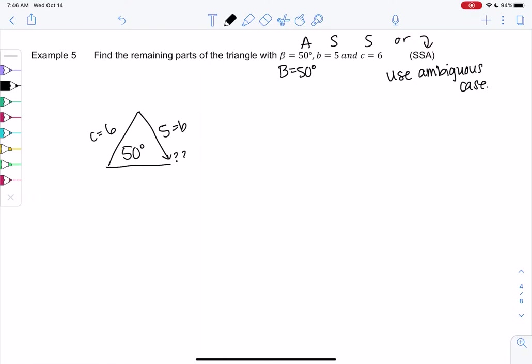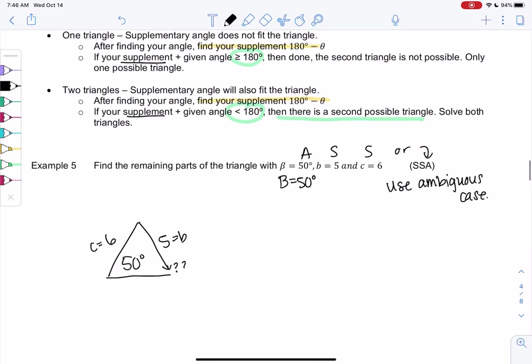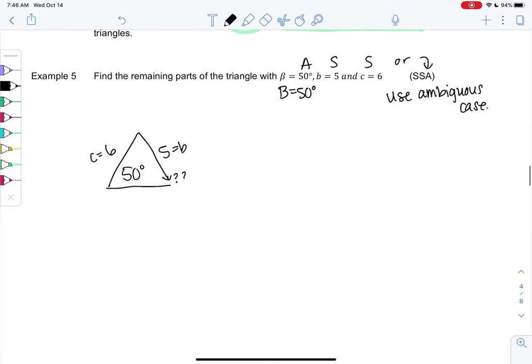So as we start solving the math, we'll find out. So we'll start with the law of sines, and then we will check the supplement. So law of sines tells me sine of 50 over 5 equals sine of this unknown angle over 6. So sine of C over 6.